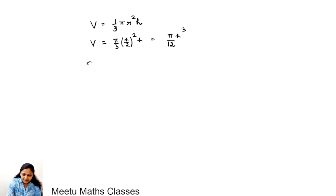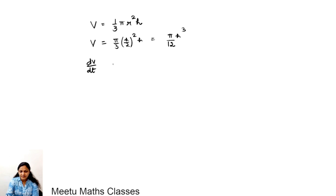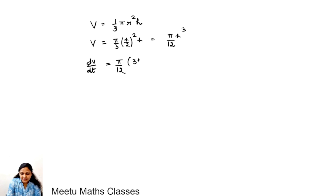Now we differentiate V with respect to t. Since dV/dt is given, differentiating V = πh³/12 gives dV/dt = (π/12)·3h²·(dh/dt) = (π/4)h²·(dh/dt).